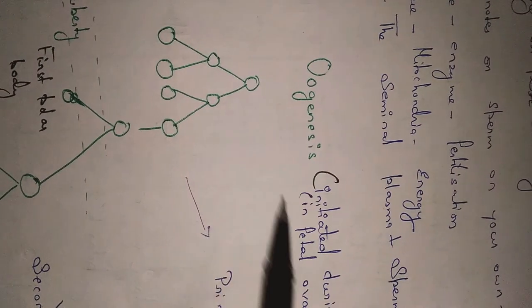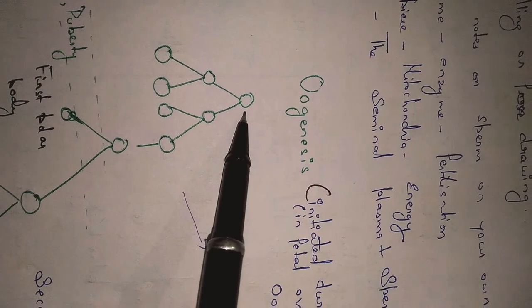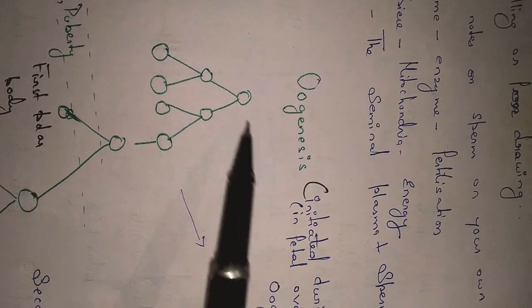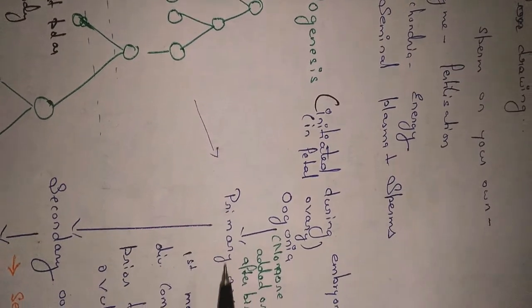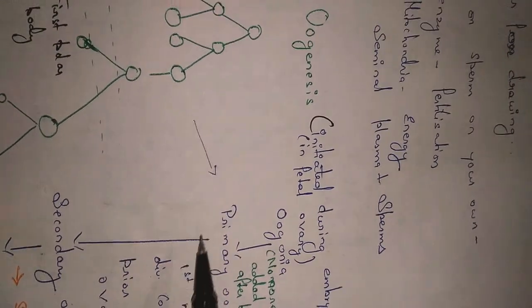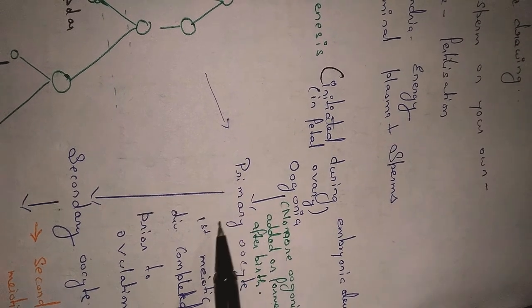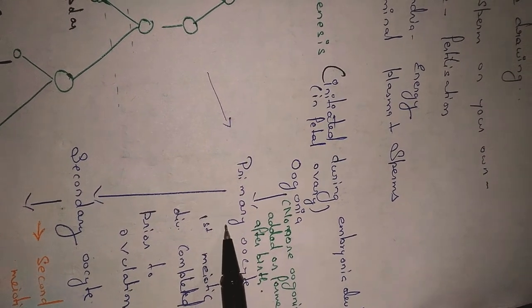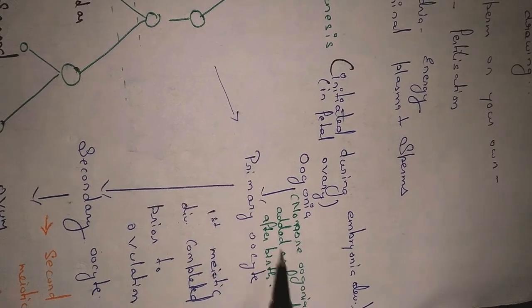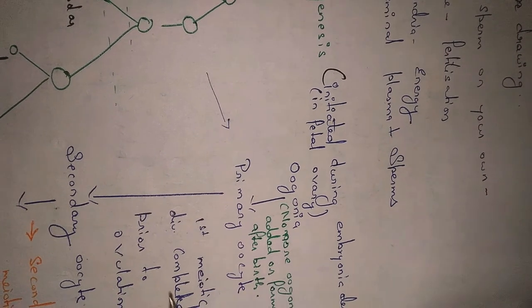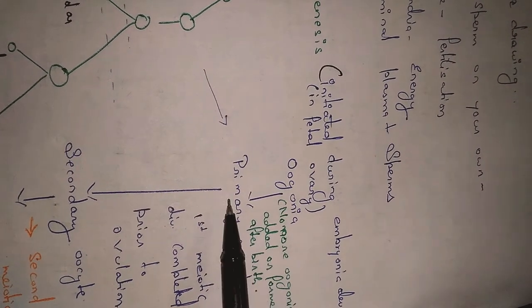Let us understand the same process with this diagram. Oogonia are the cells present in the female ovary during the fetal stage. Oogonia become the first structure called the primary oocyte. The primary oocyte is arrested in the prophase of meiosis one. There is no further addition of oogonia after birth.